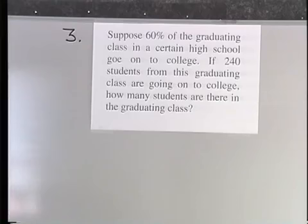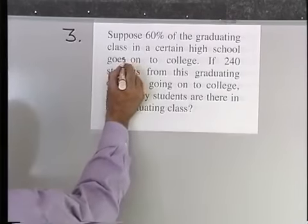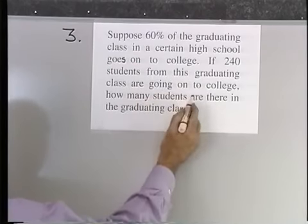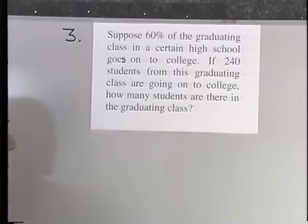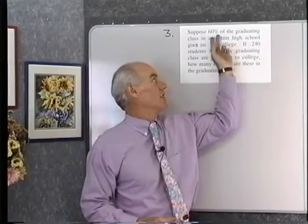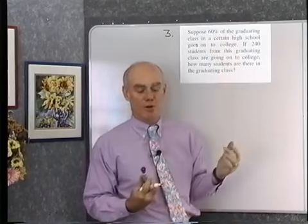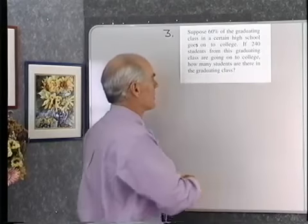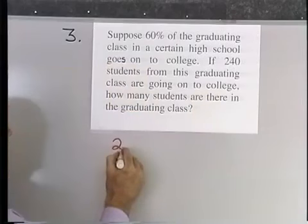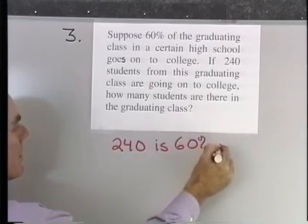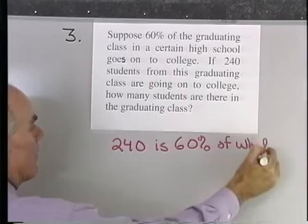Problem three: Suppose 60 percent of the graduating class in a certain high school goes on to college. If 240 students from this graduating class are going on to college, how many students are in the graduating class? We know 240 students are going on to college, and that's 60 percent of the graduating class. What we want to know is the size of the graduating class. So we ask: 240 is 60 percent of what number?